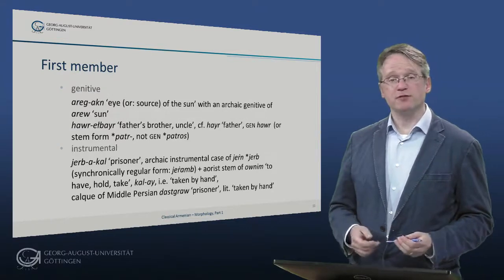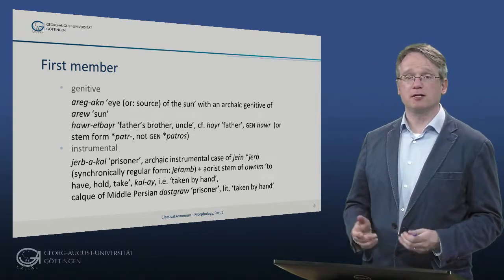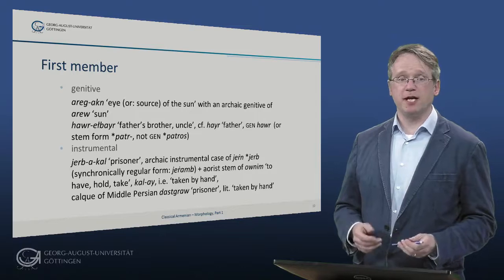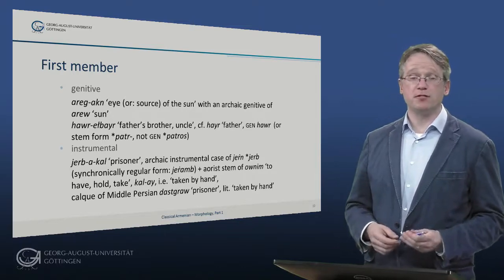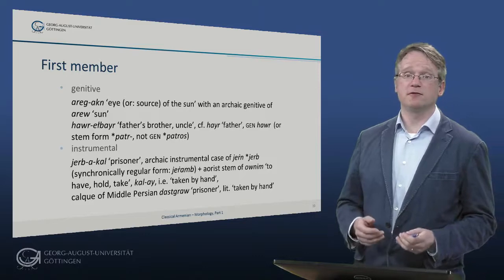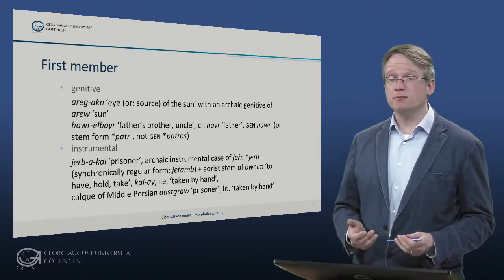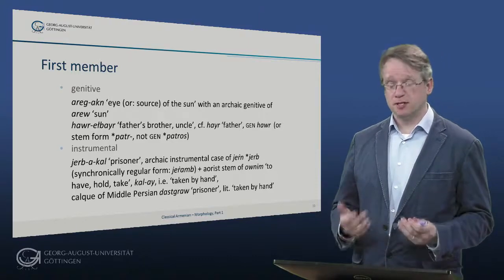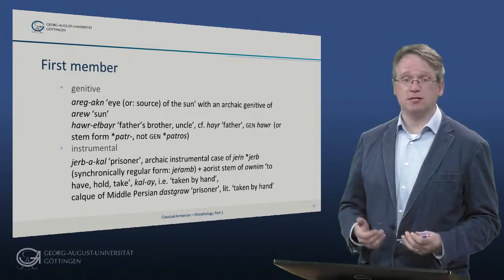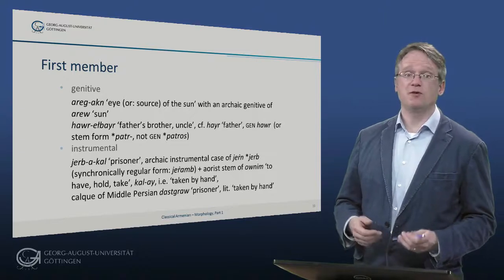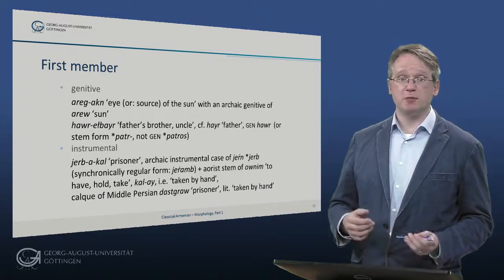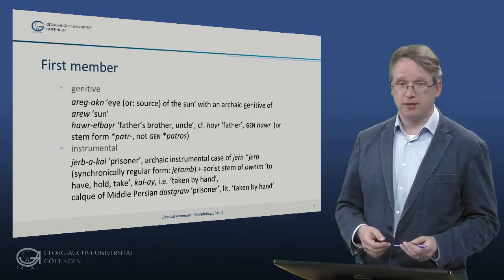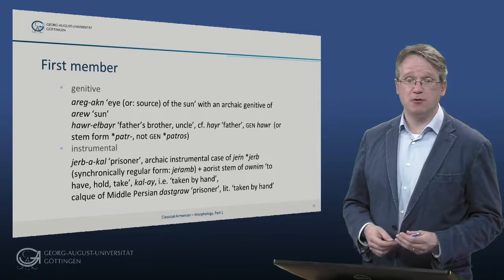Genitives also occur as first members. For example, in aregaken – source of the sun – with an archaic genitive of arev – sun. And horegbaya – father's brother, uncle – with a genitive of higher. Historically this may continue the stem pater, but synchronically it is identical to the genitive. With the instrumental, we have dzerbakal – prisoner – with the archaic instrumental case of dzern, namely dzerb, and the synchronically regular form being dzeramb. Added to that is the aorist stem of the suppletive verb unnim – to have, hold, take – namely kala, meaning taken by hand, which is probably a calque of Middle Persian dust gadaf – prisoner, literally taken by hand.